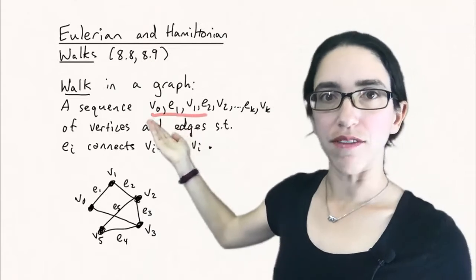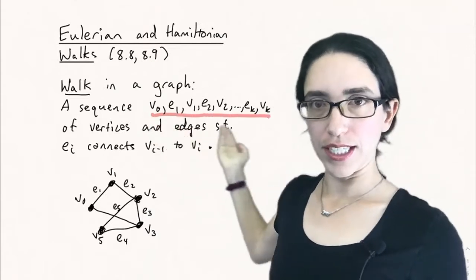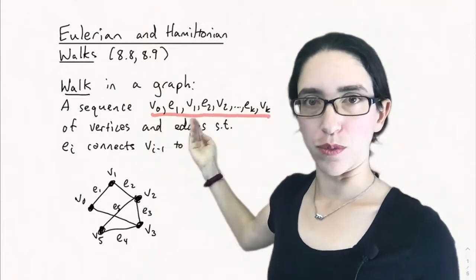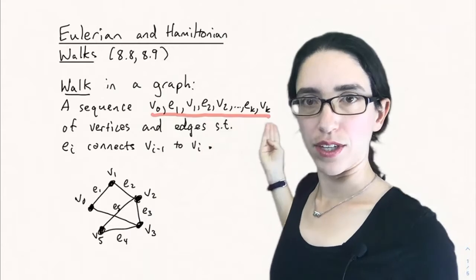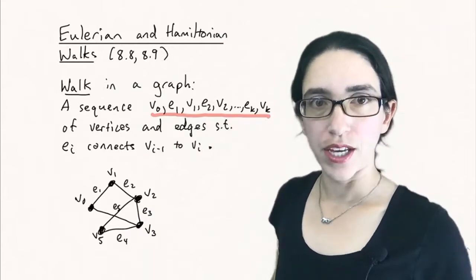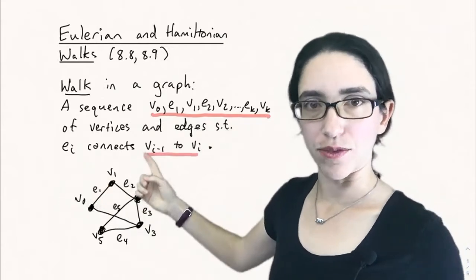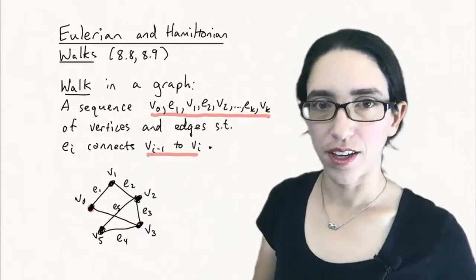Let's recall what a walk in a graph is. It's a sequence of vertices and edges, v0, e1, v1, e2, v2, e3, up to ek, vk, of vertices and edges such that edge ei connects vertex vi-1 to vi for each i.